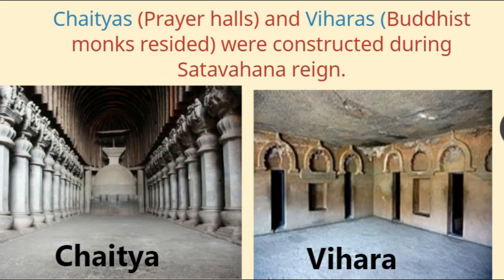Now we will know about some buildings which were constructed during the reign of the Satvahanas. These were Chaityas and Viharas. Chaityas were the praying halls, and Viharas were the places where the Buddhist monks resided.